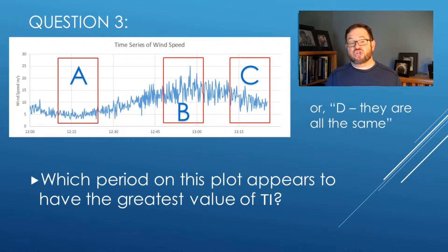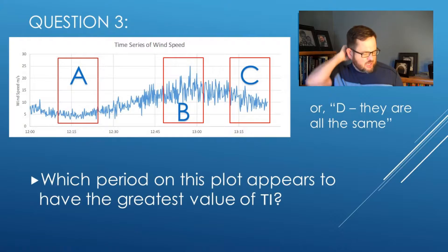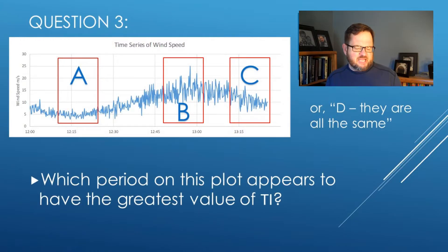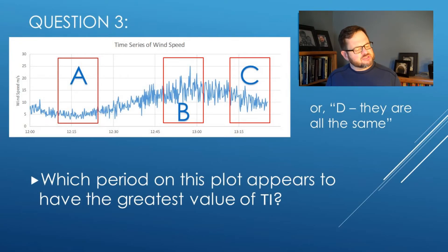Question 3 is another question about that time series that's up there — the windows of time that I've labeled. This is in some ways the hardest one. Which period on this plot seems to have the greatest value of the turbulence intensity, Ti? A, B, C, or D — they're all about the same? Make a choice from those four options and get a little feedback before we move on to question 4.